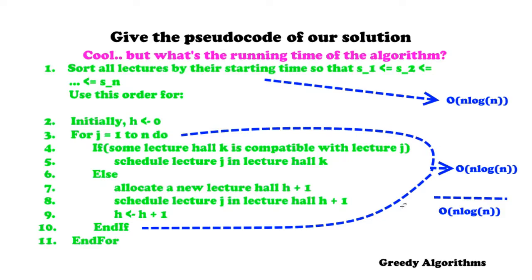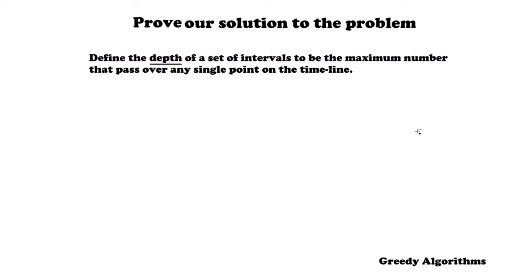We've shown the algorithm is fast, but we also want to prove it is correct and optimal. Before proving optimality, we need two supporting theorems. For these, we need the definition of depth: the depth of a set of intervals is the maximum number of intervals that pass over a single point on the timeline.